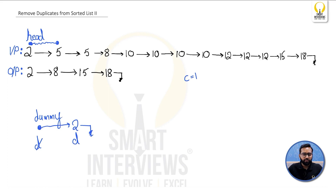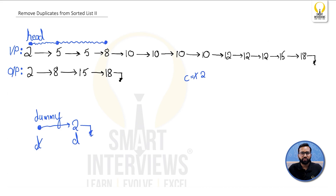We continue iterating on the original linked list. When we iterate over 5, once we reach the next different value we stop, and the count of 5 comes out to be 2. Since the count is 2, we do not add it to the output linked list, and we continue iterating.